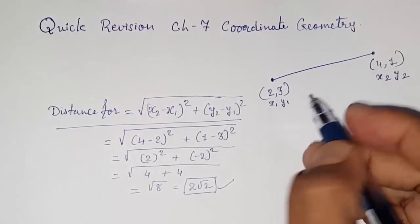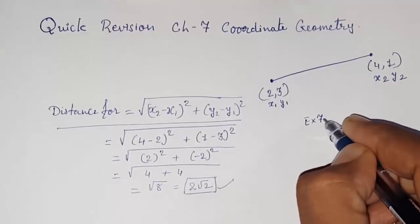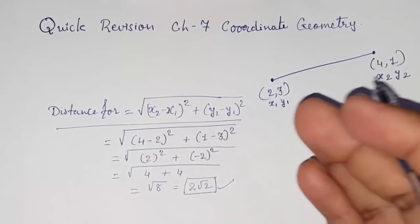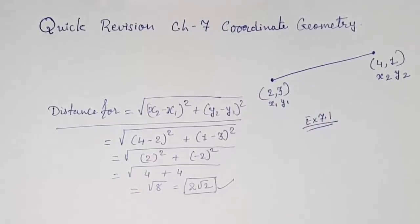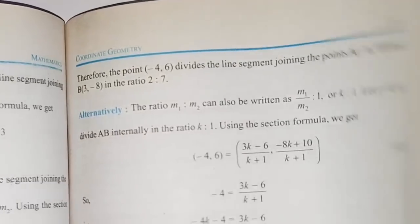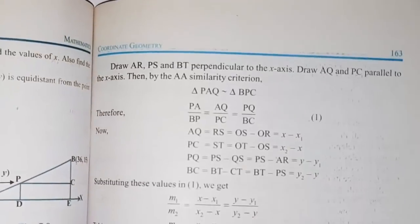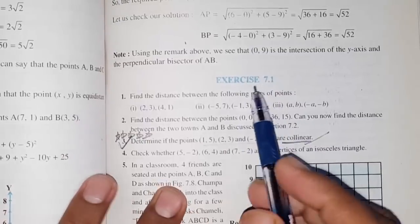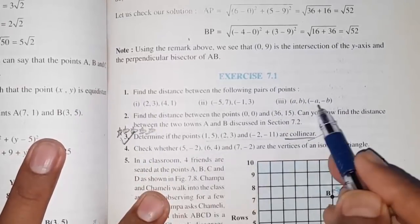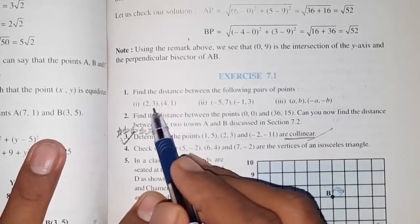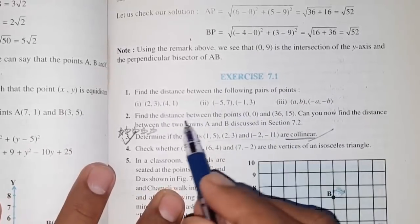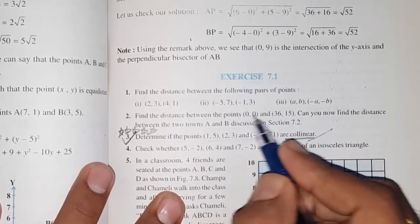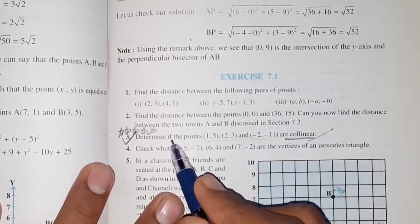In Exercise 7.1, you have to use this distance formula concept only, but it is applied to many different types of questions. Looking at the NCERT textbook Exercise 7.1: the first question asks you to find the distance using the same formula. The second question also asks you to find the distance with the distance formula.